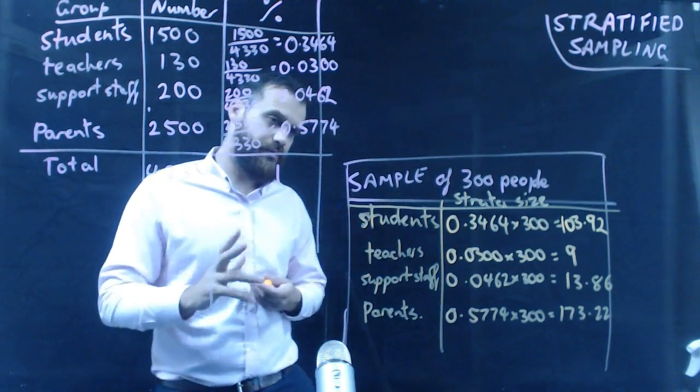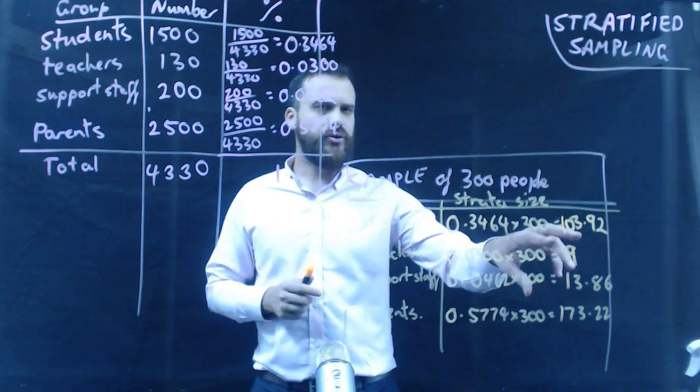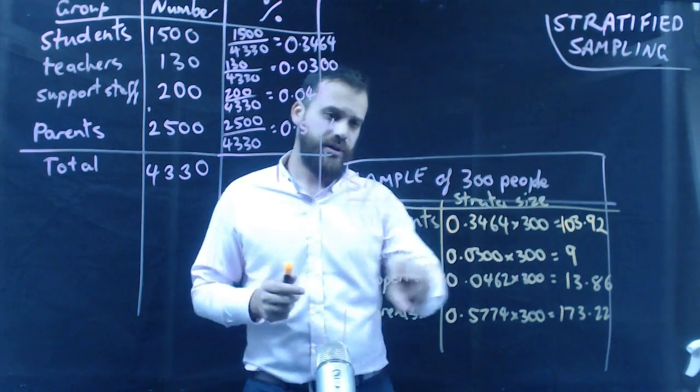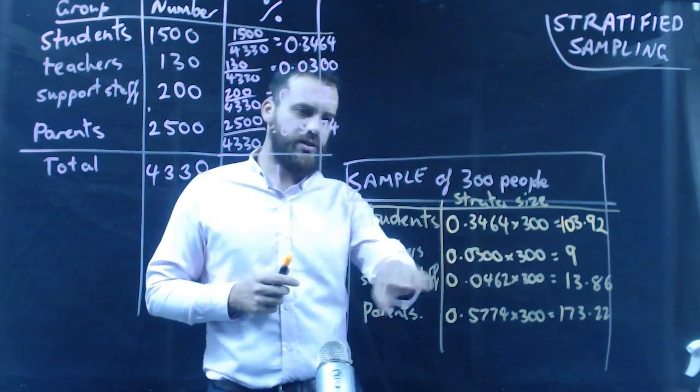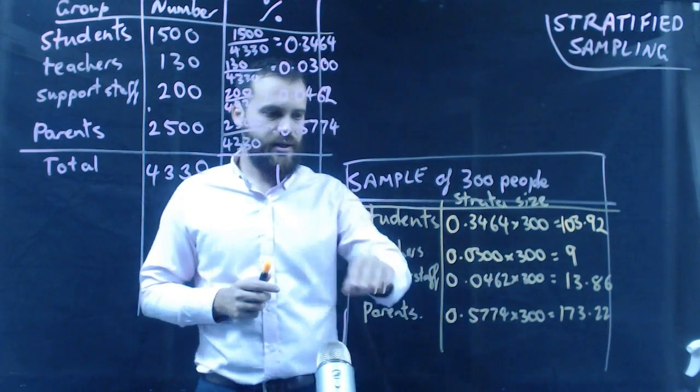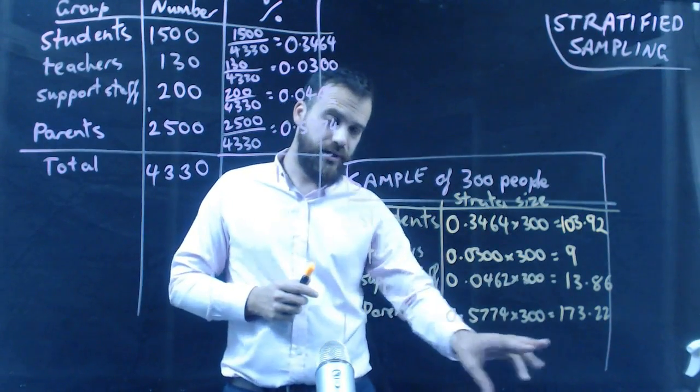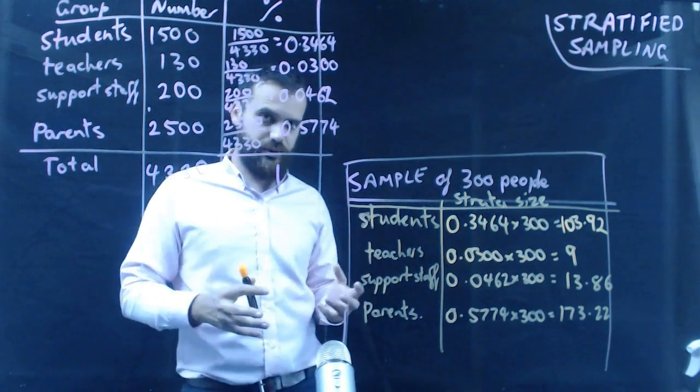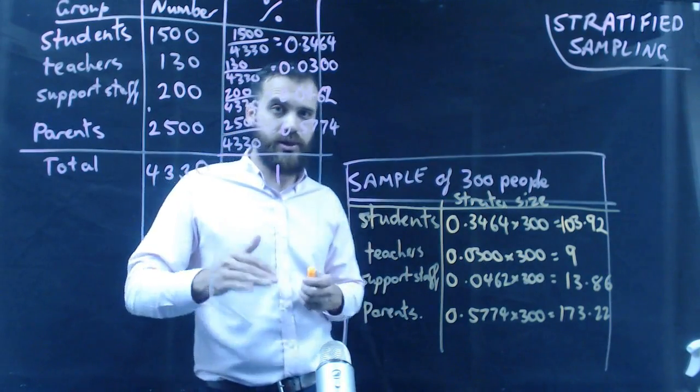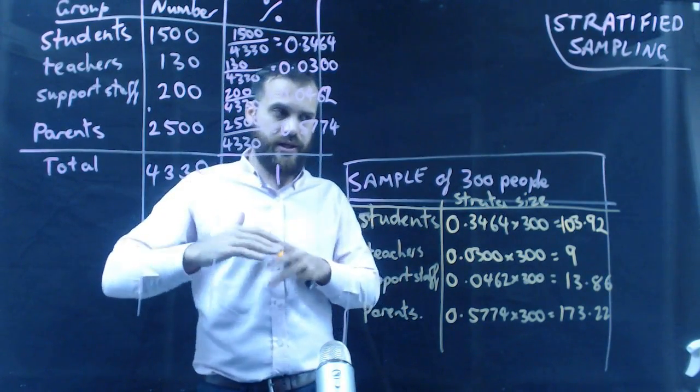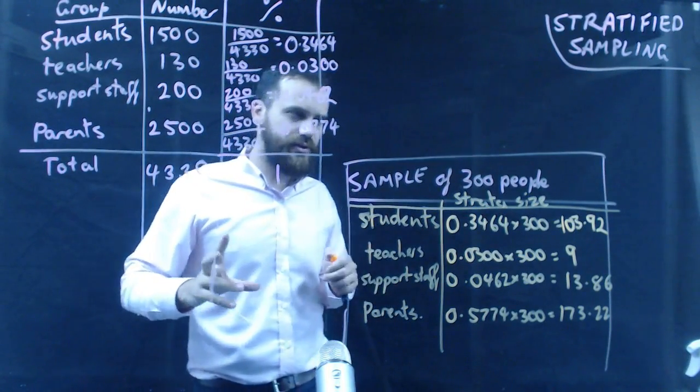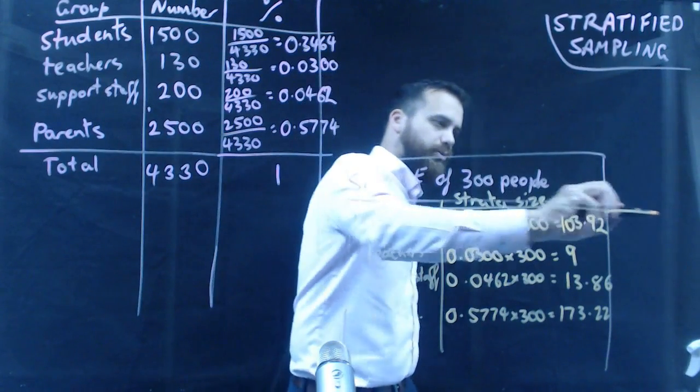Okay, so here's my stratified sample. Students, I'm going to have 103.92. Teachers, I'm going to have 9. Support staff, I'm going to have 13.86. And parents, I'm going to have 173.22. Now, obviously, we can't have decimals of these. So, I'm hoping that when I round up and when I round down, everything will just sort itself out. So, let's see. Let's do our final bit of rounding here.